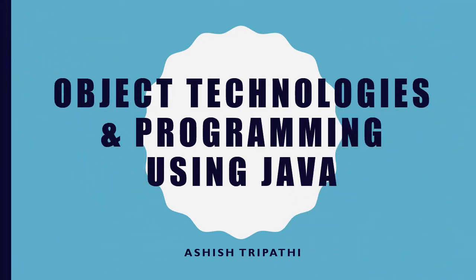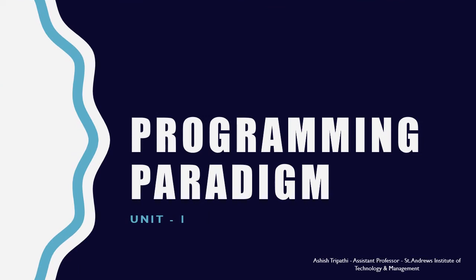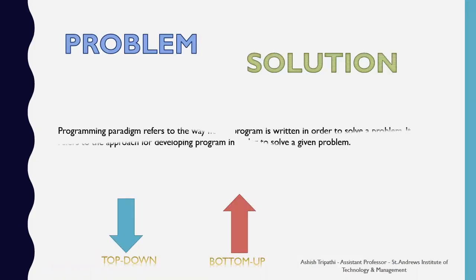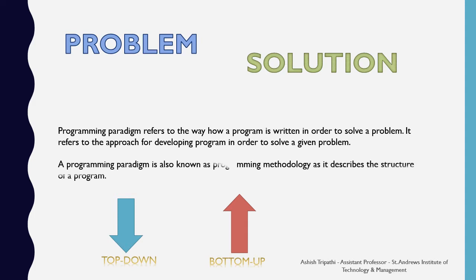Welcome to Object Technologies and Programming using Java. Today, let me introduce you to the programming paradigm of Unit 1 of this course. Whenever a problem is given to you, you always need to find a solution. You can either opt for a top-down or bottom-up approach. Programming paradigm refers to the way how a program is written in order to solve a problem. It refers to the approach for developing programming in order to solve a given problem.